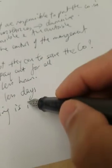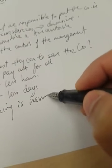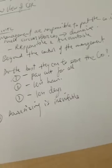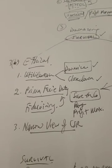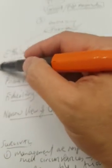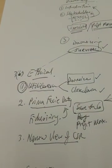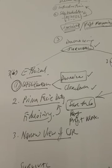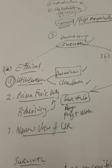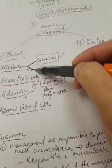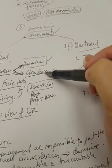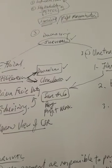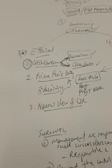For example: number one, a pay cut for all; number two, maybe fewer hours; number three, fewer days — meaning instead of working five days, all staff work three days — and so forth. So are they doing their best to mitigate the situation and reduce costs without downsizing? If they have done so, then number four: downsizing is inevitable. If downsizing is inevitable, then we say we agree it is a scenario for survival, and it seems the utilitarian argument is the strongest because there are only two options.